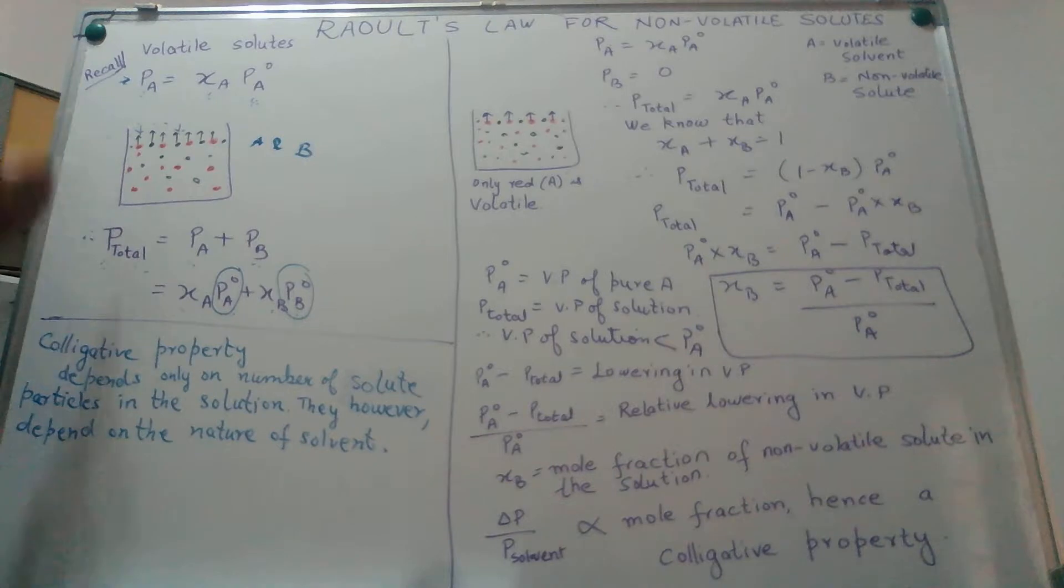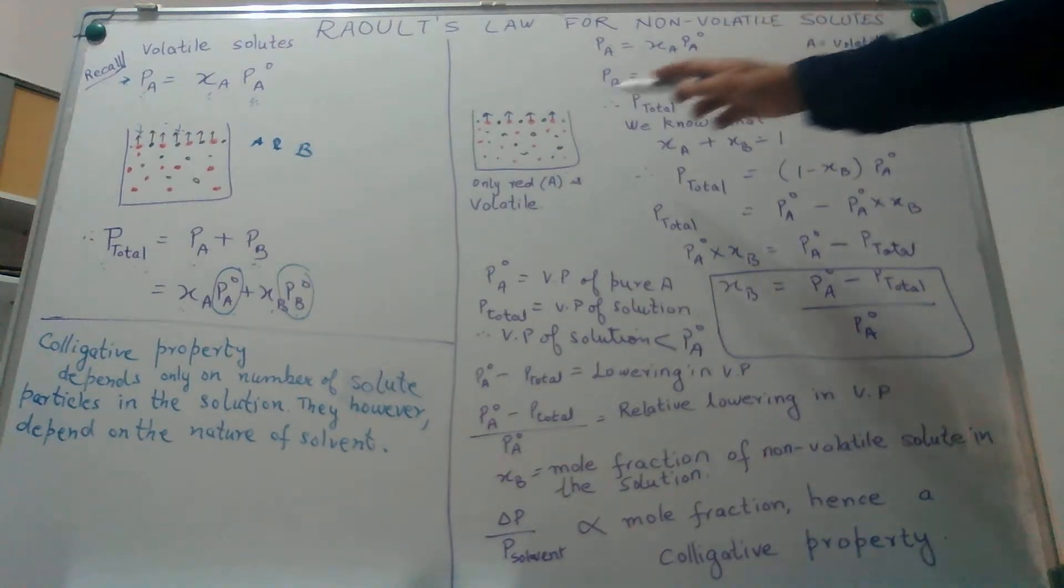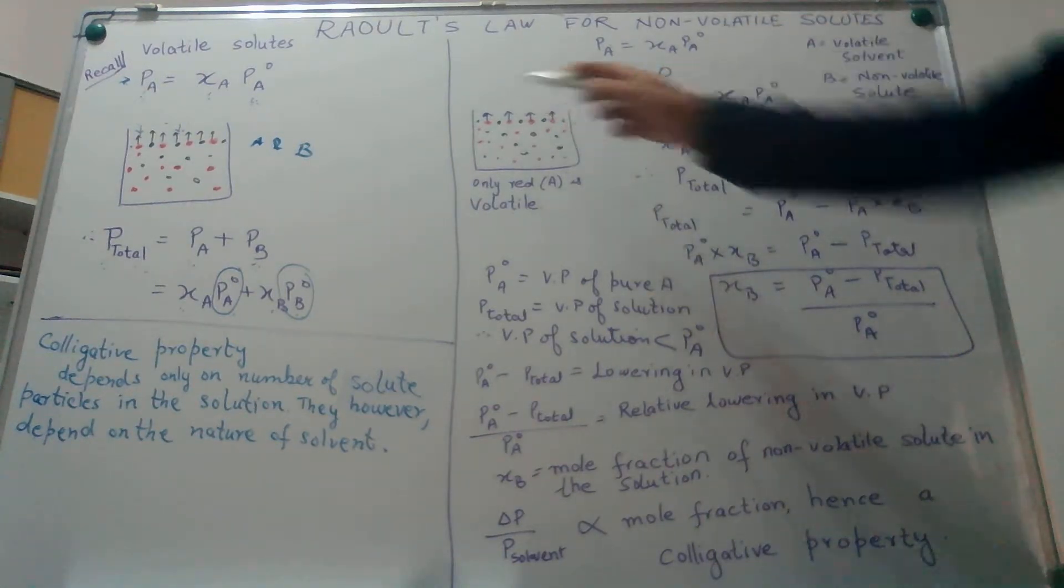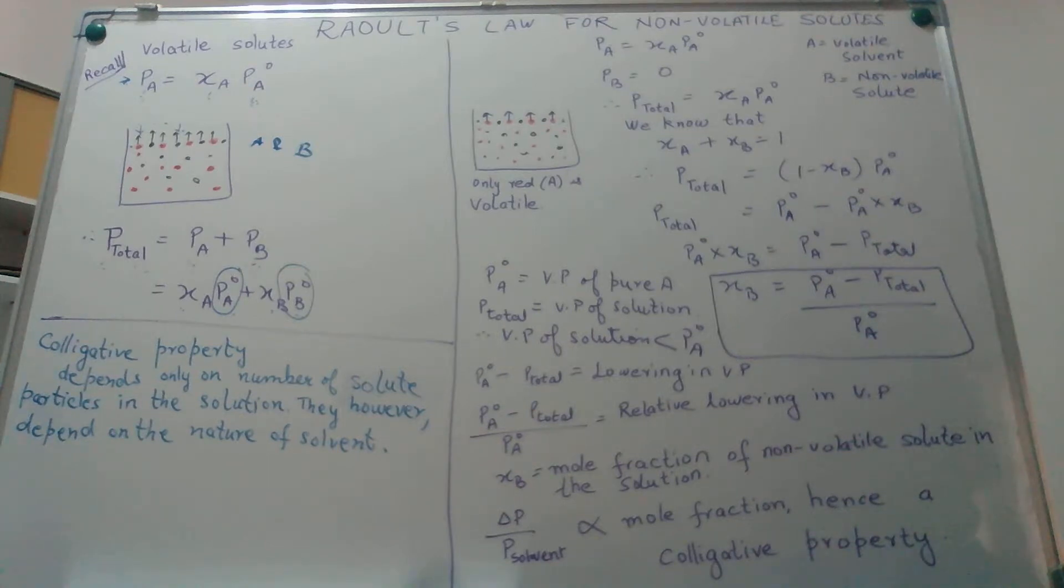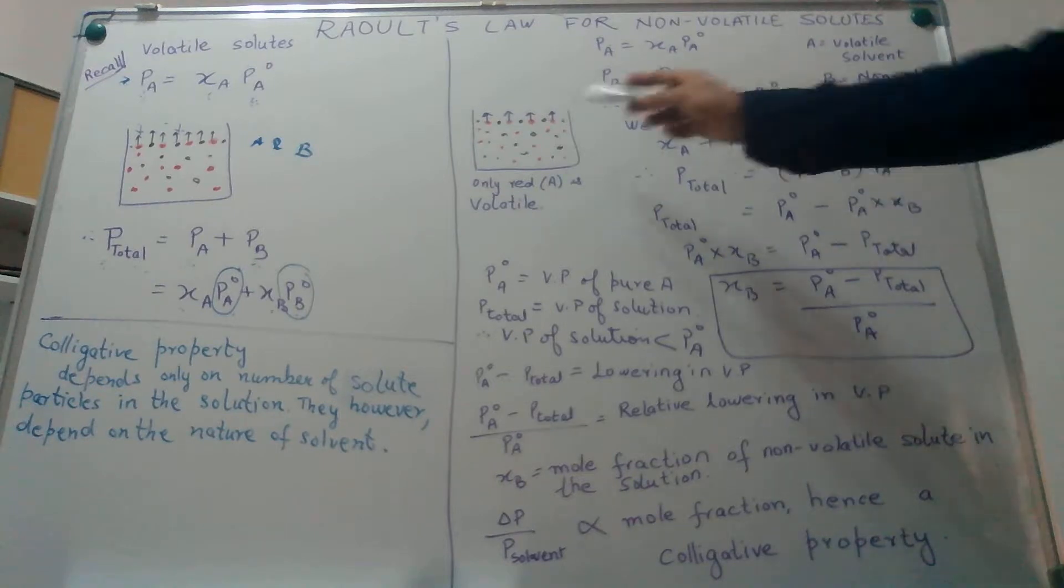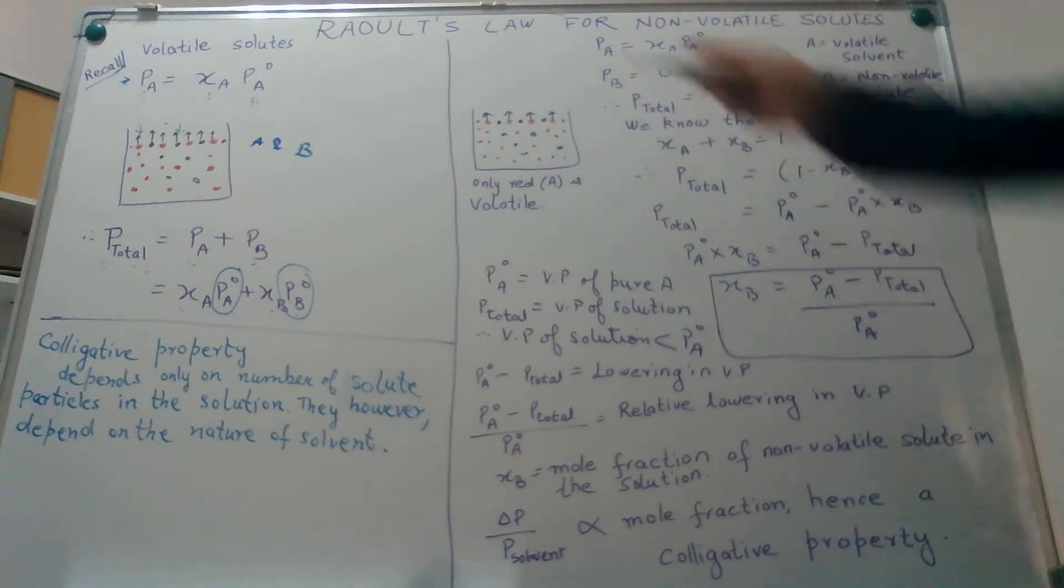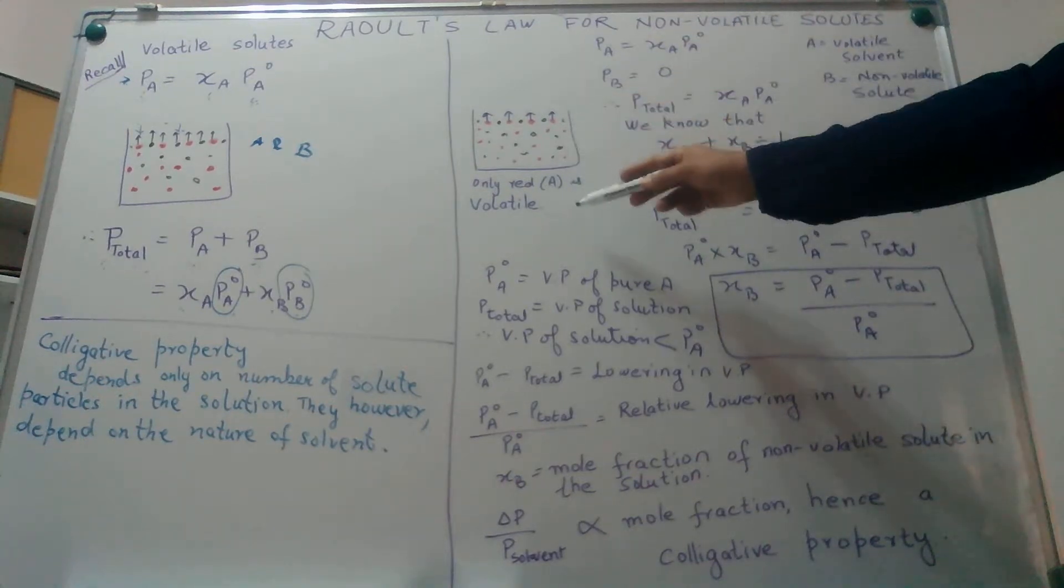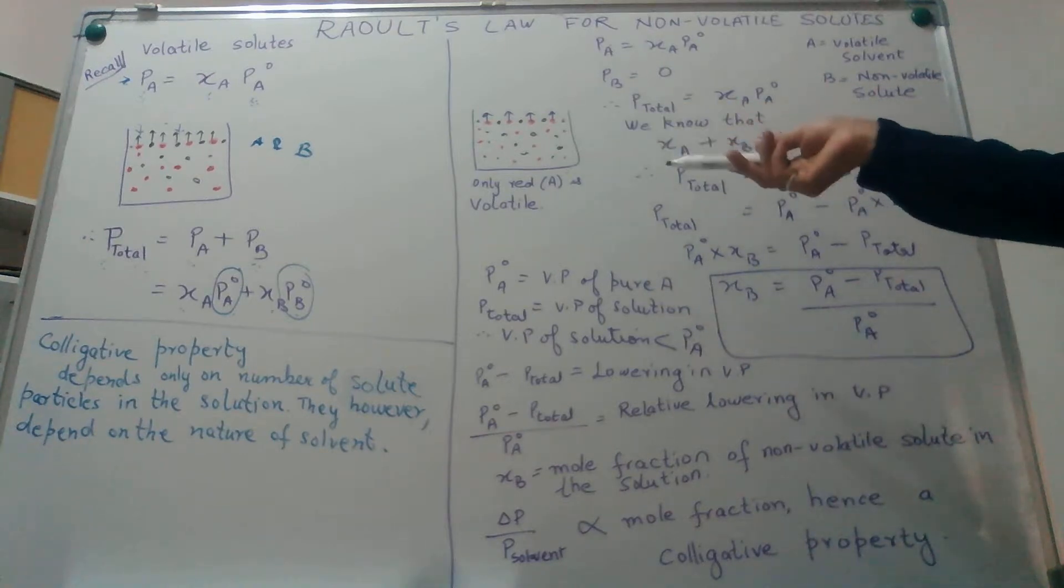What if one of the components decides not to vaporize? What happens over here is the component, denoted by the black dot, still stays on the surface of the liquid mixture but does not convert itself into the vapor state like the red dots do. So here my red component is volatile and black is non-volatile.